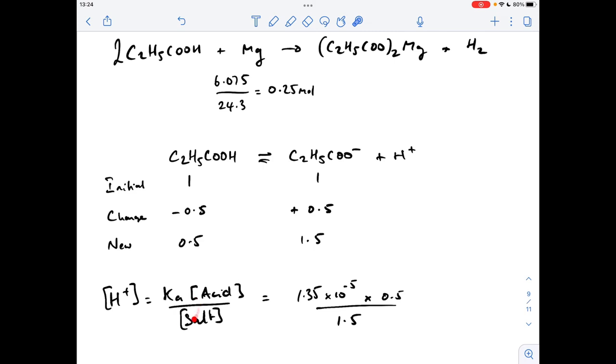So if we feed that into the Casadova salt expression to calculate the new H-plus concentration, Ka is still the same, 1.35 times 0.5, but the new acid concentration is 0.5, the new salt concentration is 1.5. So that's giving us an H-plus concentration now of 4.5 times 10 to the minus 6 moles per decimeter cubed.